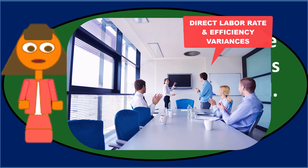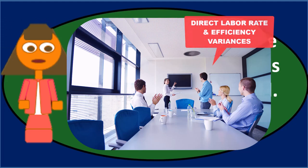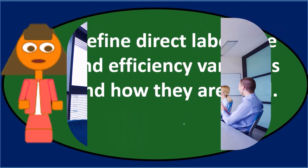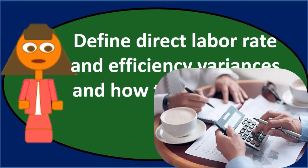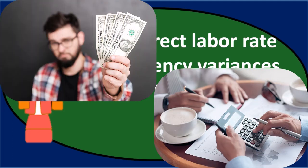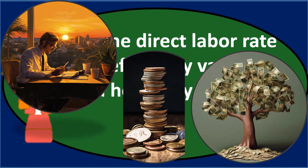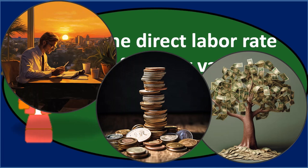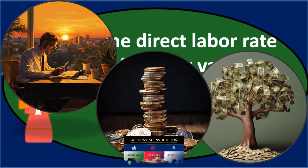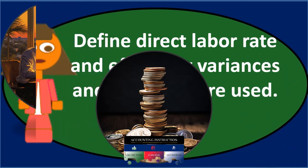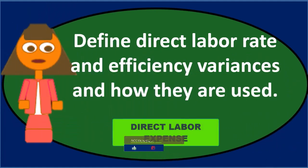The direct labor rate and efficiency variances mean that we have set up a standard. We're going to have standards that we set up and compare — kind of like budgeted numbers — to the actual numbers. I would typically think of these variances by looking at the line item for direct labor on a budgeted income statement compared to the actual income statement. We can then take the difference and ask: is this good or bad? Do we have more or less direct labor expense for the period than was budgeted?